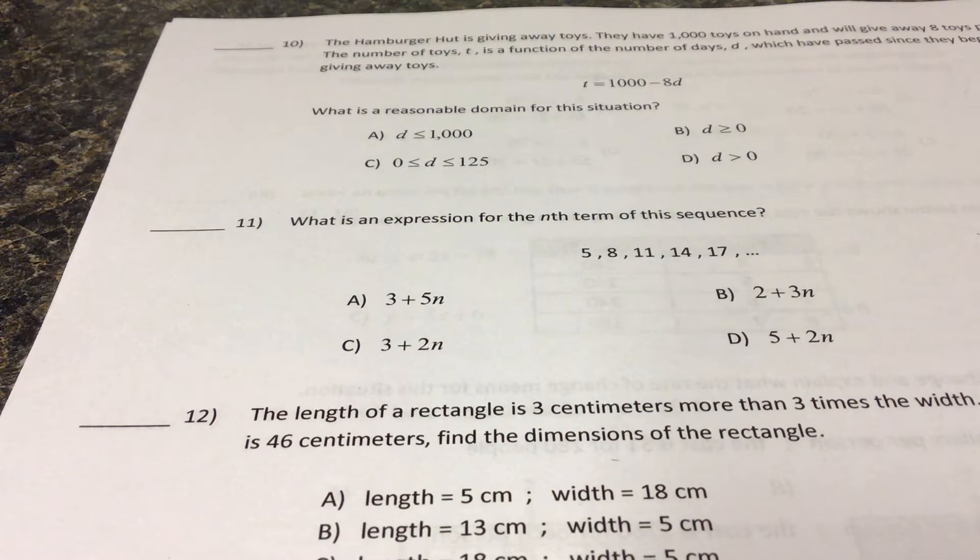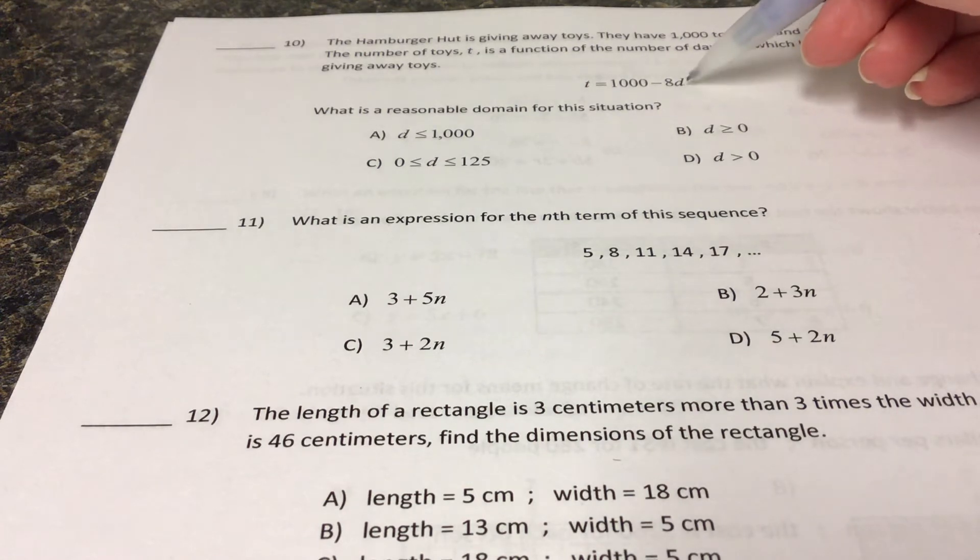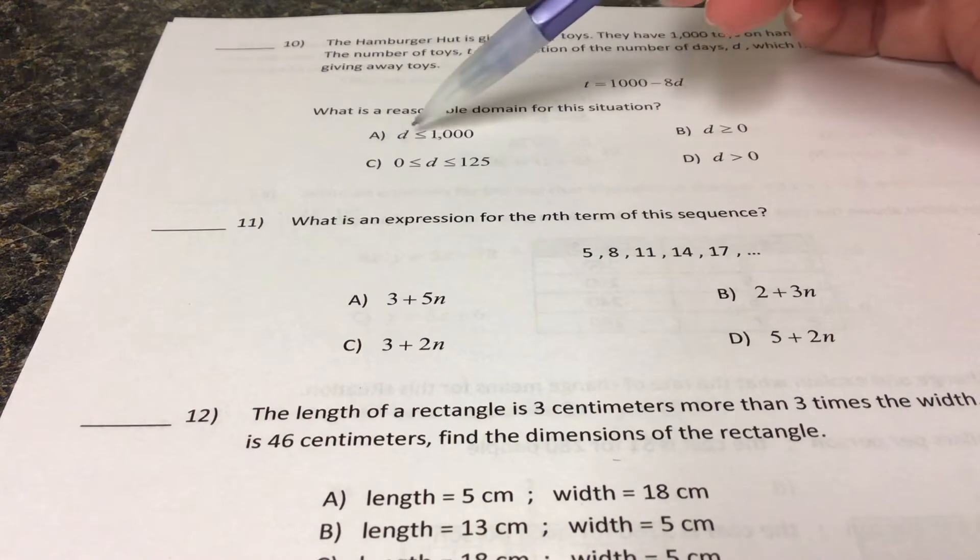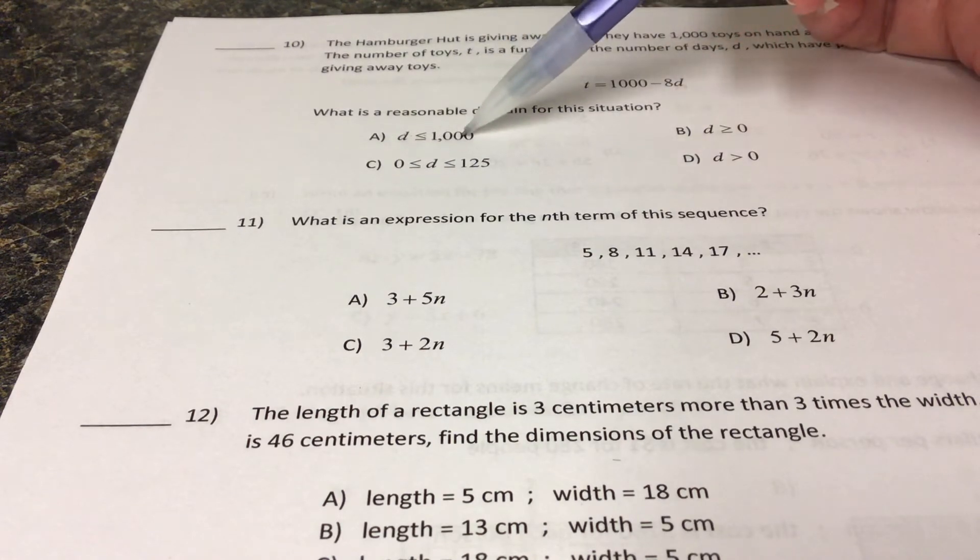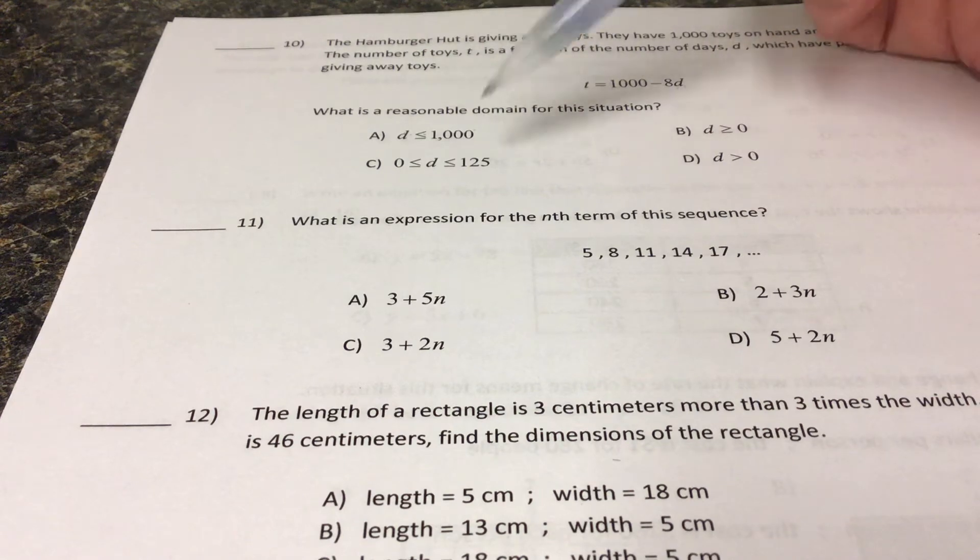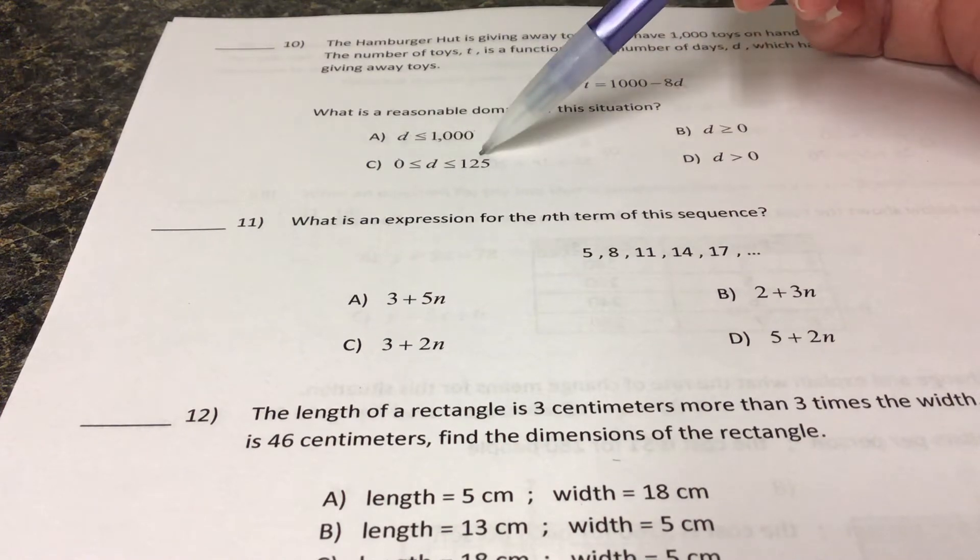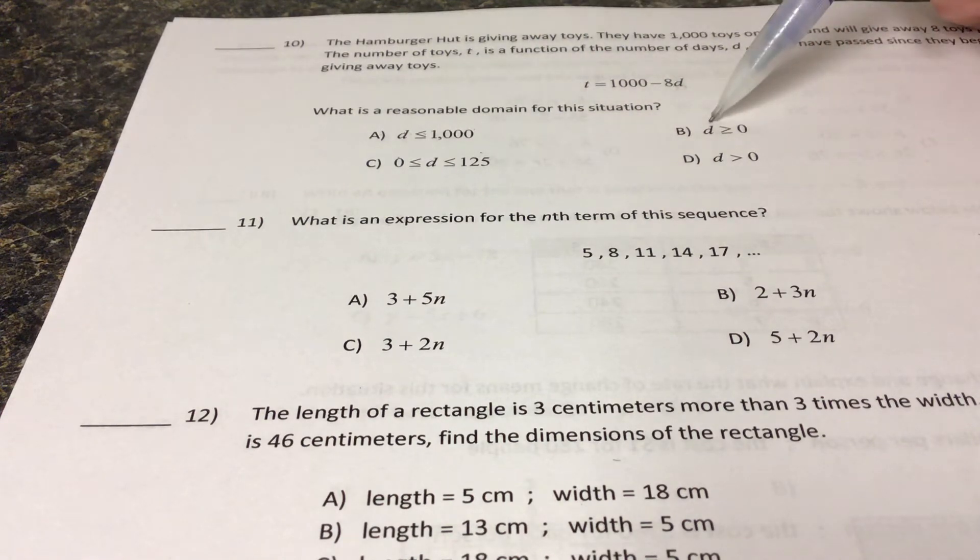It says what is a reasonable domain for this situation. So the domain has to deal with what we plug into the formula. If this was a letter x, this would be whatever we input. So what this is saying is that our number of days would be less than or equal to a thousand. This one is saying that our number of days could be anywhere from zero to 125. This choice is saying that our number of days could be greater than zero.